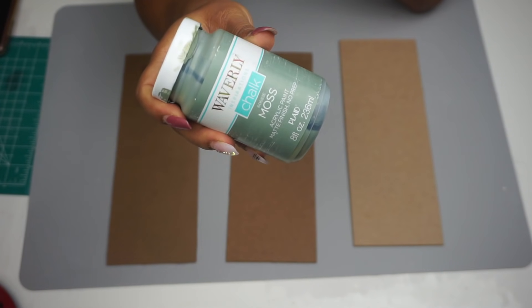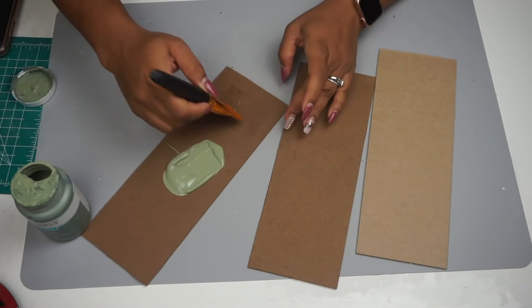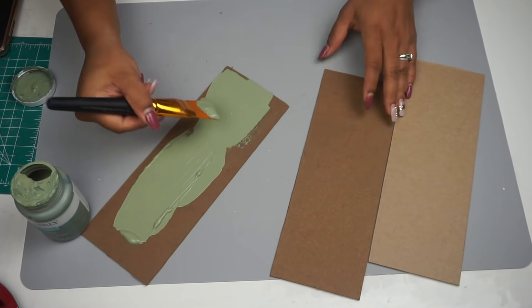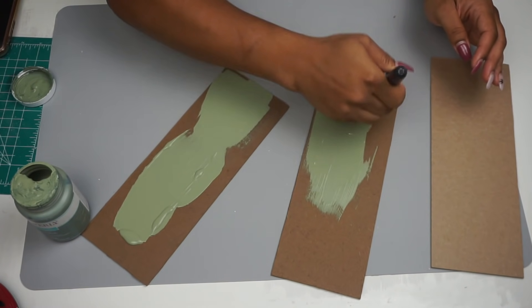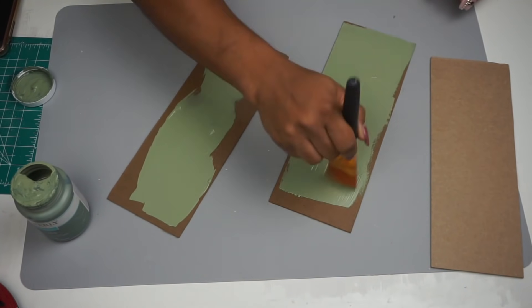The next thing I did is took my Waverly chalk paint in moss and gave each of these three signs two coats of this color. Really love this color for fall. I think it's so pretty and it just really pops when it dries.